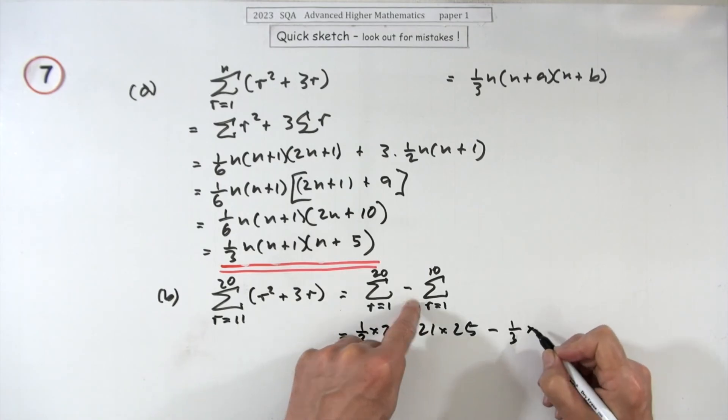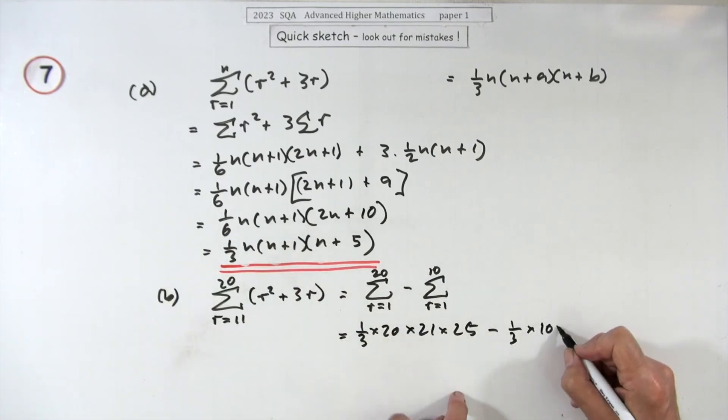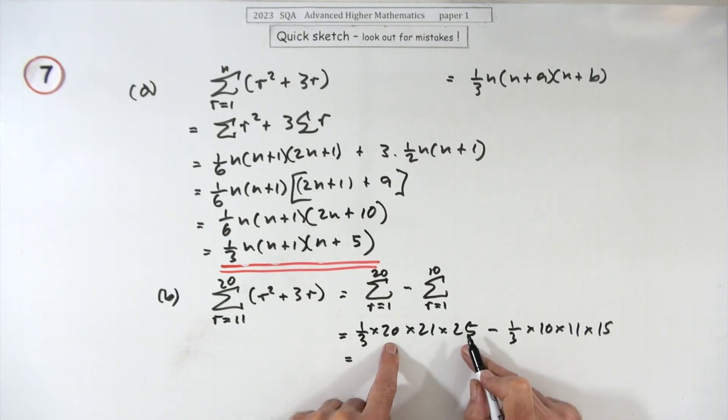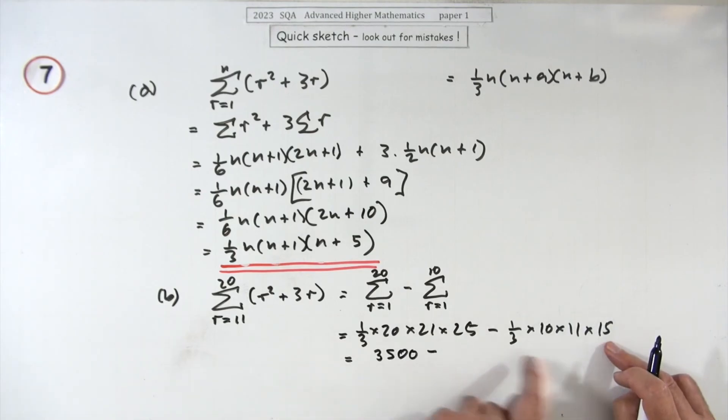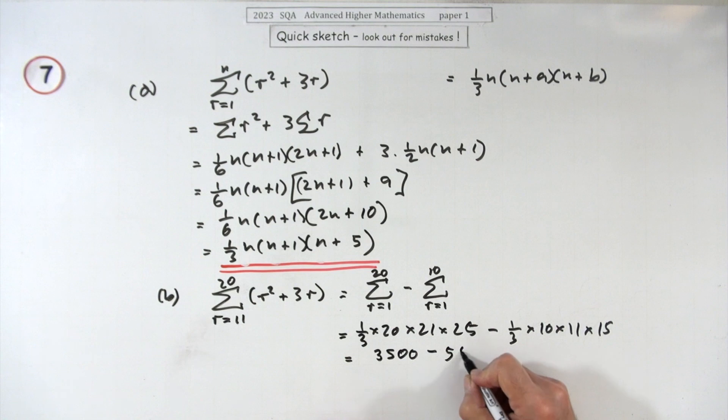So that would be, you've got seven, well that's 500 times seven, so that'll be 3500 minus, that's a five, 55, 550, so that's just 50 off the 3000 then, 2950. 3500 minus 550.